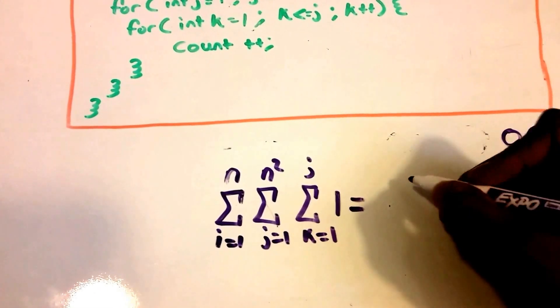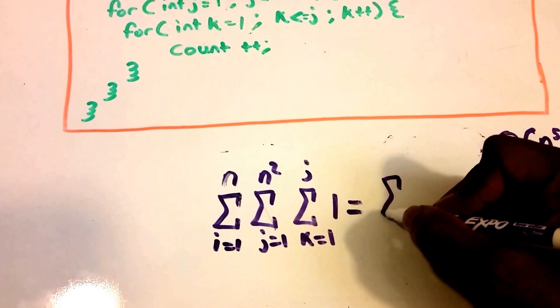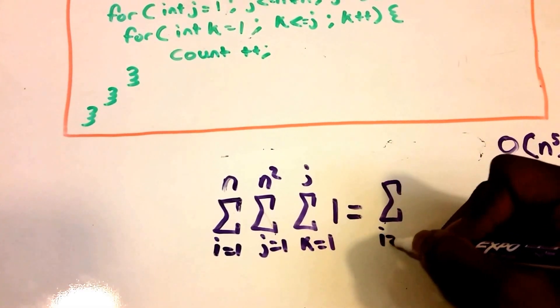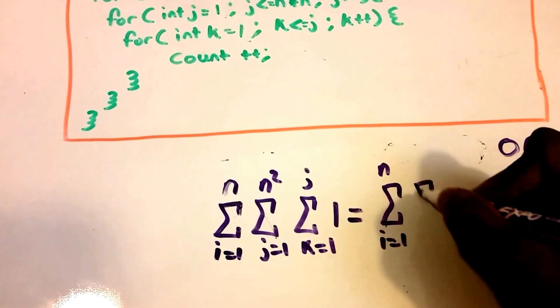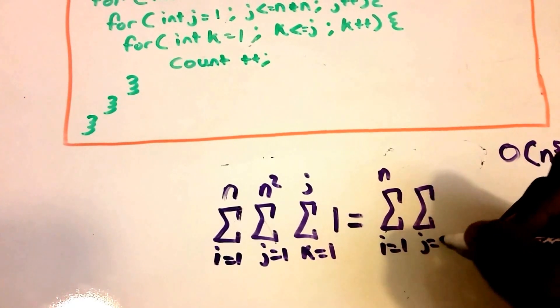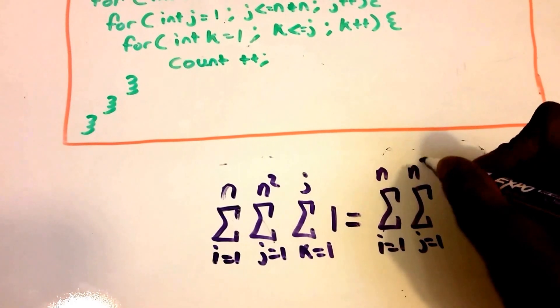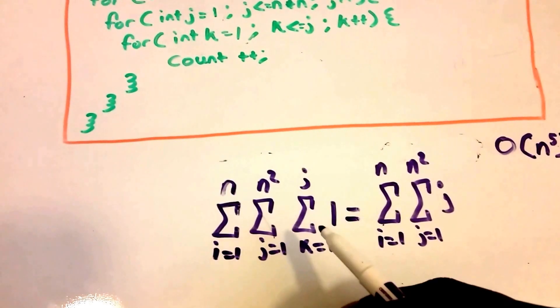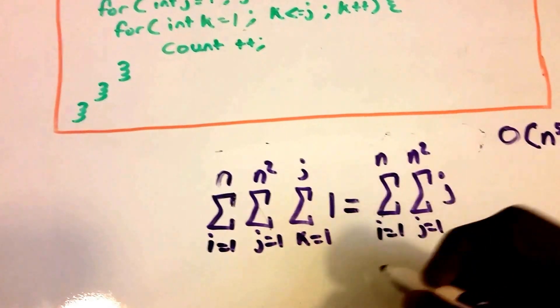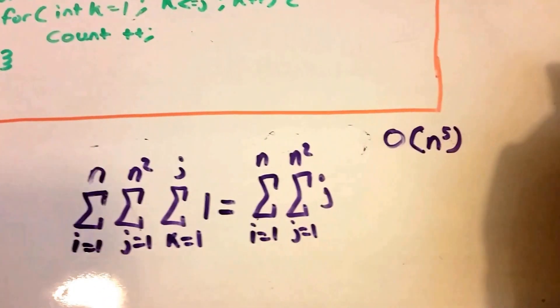So this is just equal to the summation from i equals one to n of the summation from j equals one to n squared of j. So our first summation just becomes j.